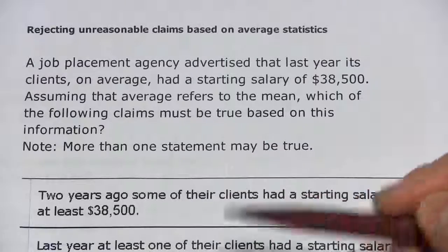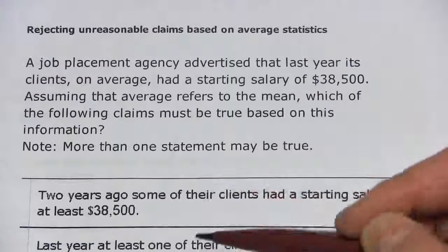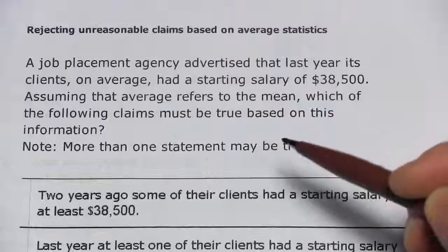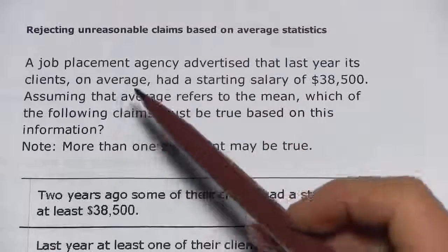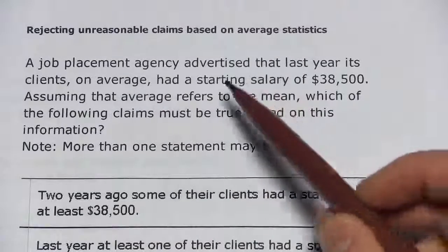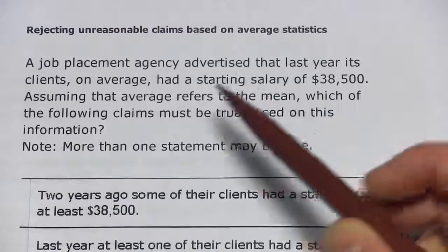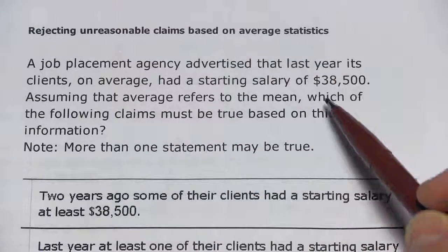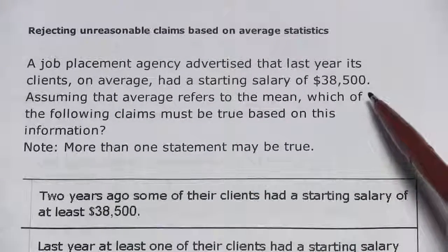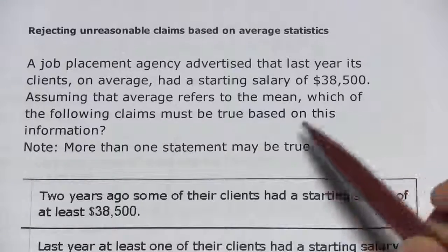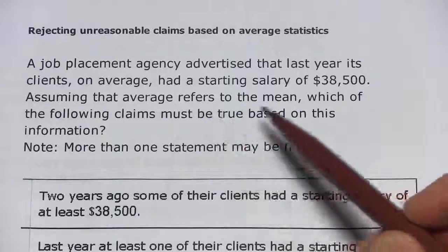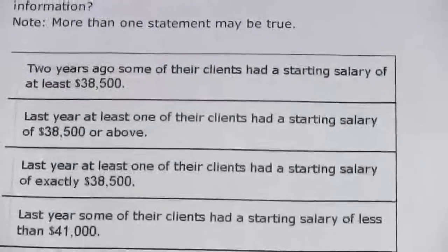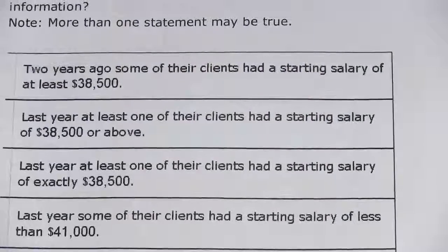In this problem, we're being asked to look at some claims that are being made based on something we know about an average. The problem says a job placement agency advertised that last year its clients, on average, had a starting salary of $38,500. That average is the same thing as mean. Which of the following claims are true? There's a whole list of claims here.